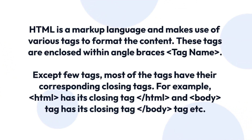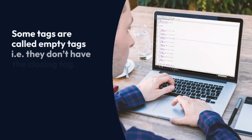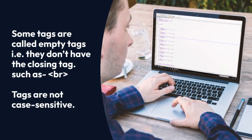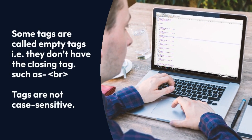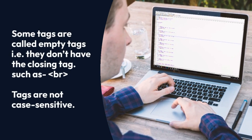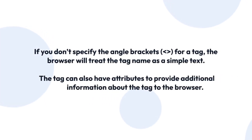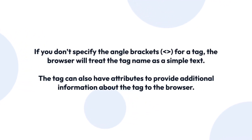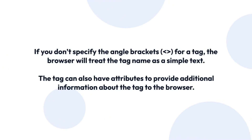For example, the HTML and body tags have their closing tags. Some tags are called empty tags, meaning they don't have a closing tag, such as the BR tag. Tags are not case sensitive. If you don't specify the angle brackets for a tag, the browser will treat the tag name as simple text. A tag can also have attributes to provide additional information about the tag to the browser.